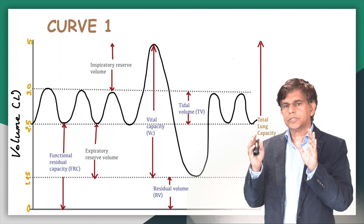R is for residual volume — in COPD patients, residual volume increases. Always remember: residual volume goes up. Then look at vital capacity — it may decrease or may remain the same. Finally, total lung capacity increases because the residual volume has increased.